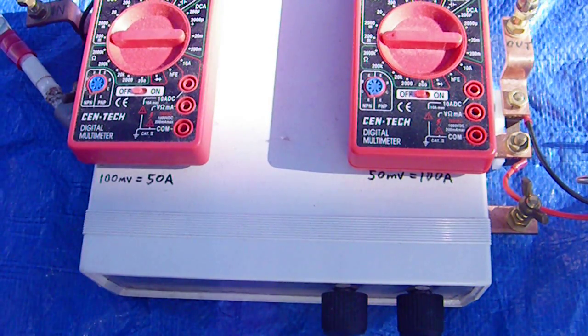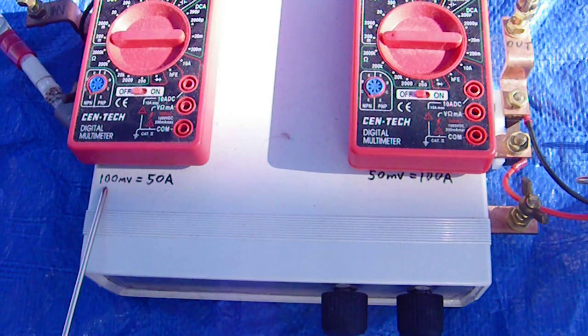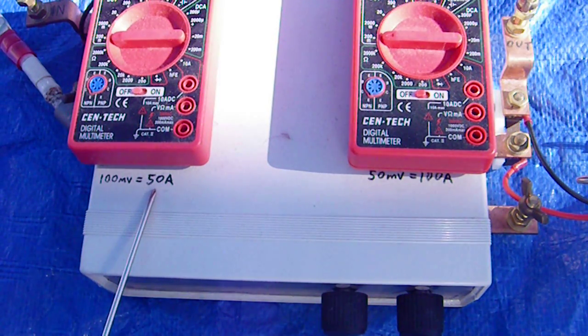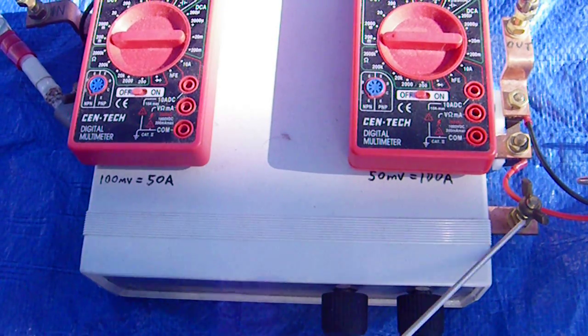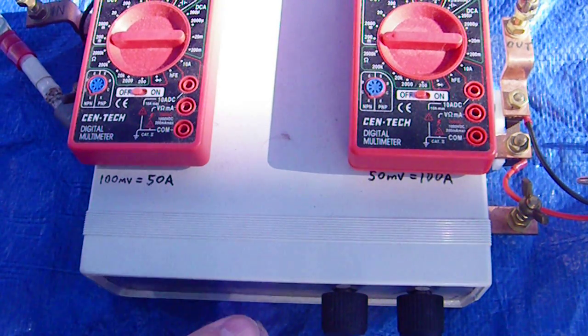This one is plugged into this shunt which is a 50 amp. This one is plugged into this shunt which is 100 amps. This unit puts out 100 amps.